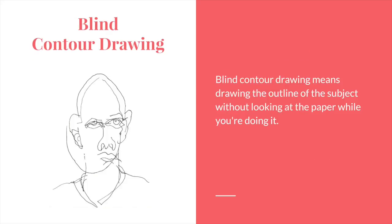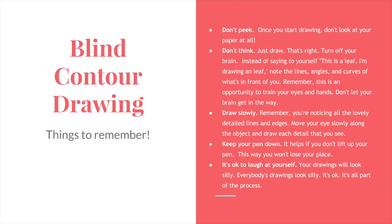The final type of contour drawing is a blind contour drawing. A blind contour drawing means drawing the outline of the subject without looking at the paper while you're doing it — you keep your focus on the subject and don't look at your paper as you draw. A few tips: don't peek once you start, don't look at your paper, just look at the subject. Don't overthink it — instead of thinking 'I'm drawing a leaf,' note the lines, angles, and curves of what's in front of you. It's an opportunity to train your eyes and hands.